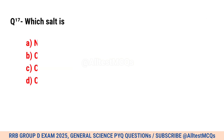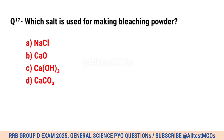Question No. 17. Which salt is used for making bleaching powder? Correct option is A. In a seal.